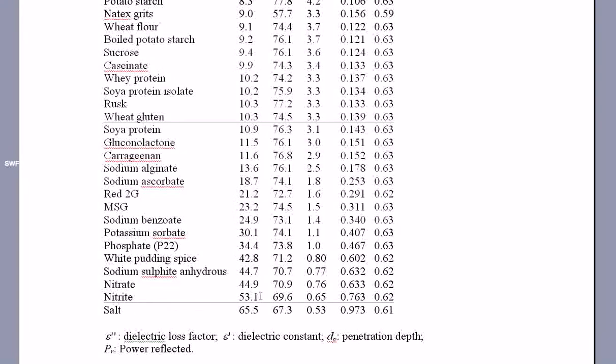These are highly dominated by the properties of water, which have epsilon prime of approximately 80. Nitrite, you notice, the real part is approximately what it was for the wheat gluten, but the imaginary part is much bigger.